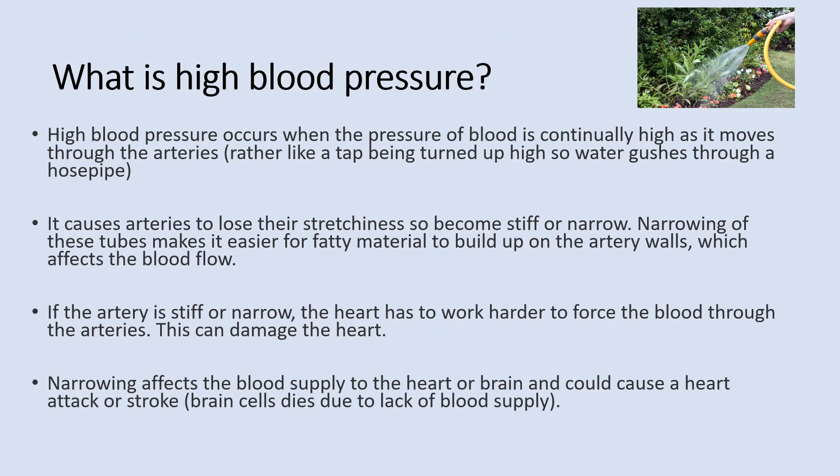High blood pressure occurs when the pressure of blood is continually high as it moves through the arteries, rather like a tap being turned up high, so water gushes through a hose pipe. It causes arteries to lose their stretchiness, so they become stiff or narrow. Narrowing of these tubes makes it easier for fatty material to build up on the artery walls, which affects the blood flow.